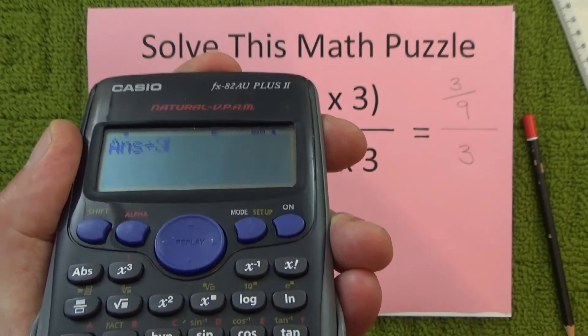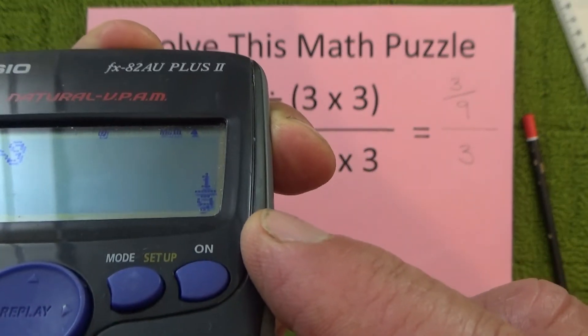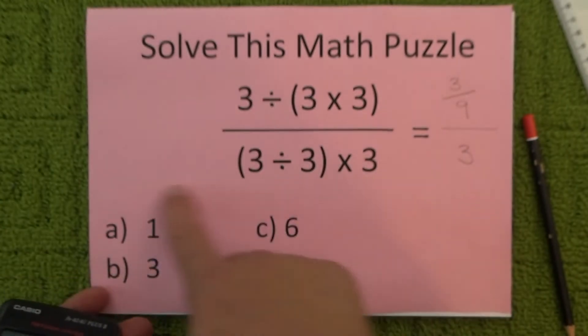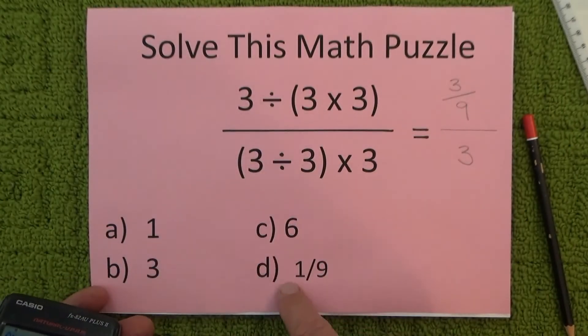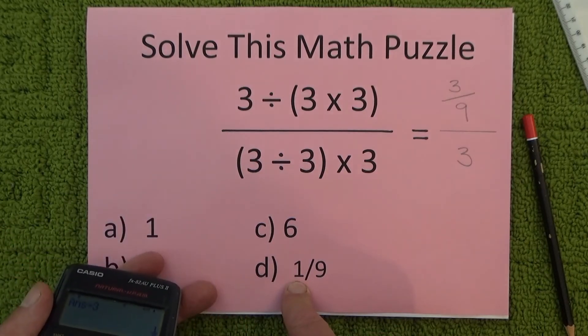So divide that by 3 and that gives me the answer of 1/9th. And there we go, look at all those options there, and you can see that D is the correct answer which is 1/9th.